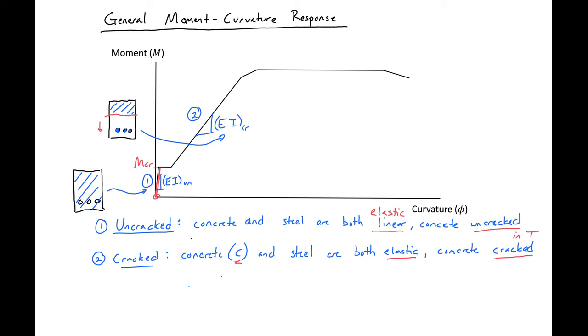Our third region will start when either we have our steel yielding or we have about 70% of F'c in our concrete. Our third region here is our inelastic response region.